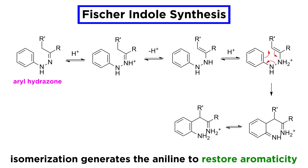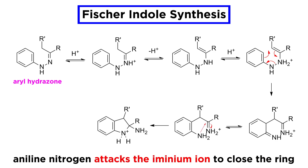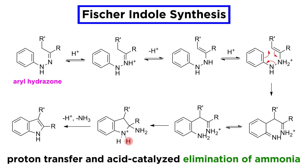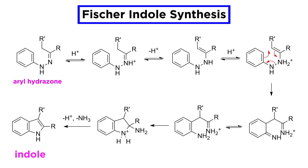This species isomerizes immediately to the more stable aniline form, thereby restoring the aromaticity of the ring. Then the nitrogen from the aniline moiety attacks the iminium ion in intramolecular fashion, to secure the five-membered ring. At this point one of these protons is lost, and then acid catalyzes the elimination of ammonia. And there we have the indole with the mechanism understood.